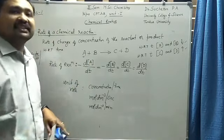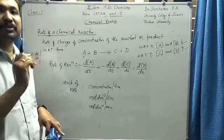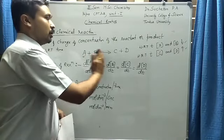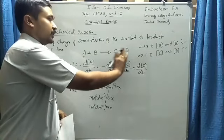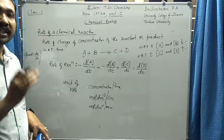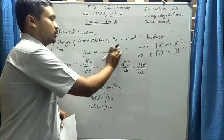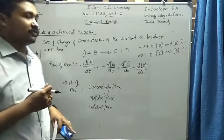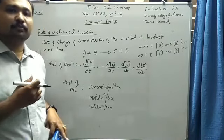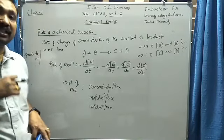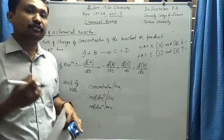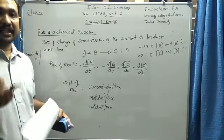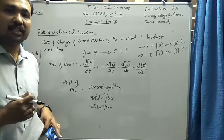This is the definition of the rate of the reaction. Here we considered a very simple reaction where A, B, C, and D all appear with stoichiometric ratio of 1. In the next class, we will take some more examples of complicated reactions and try to define the rate of the reaction for such cases. Thank you.